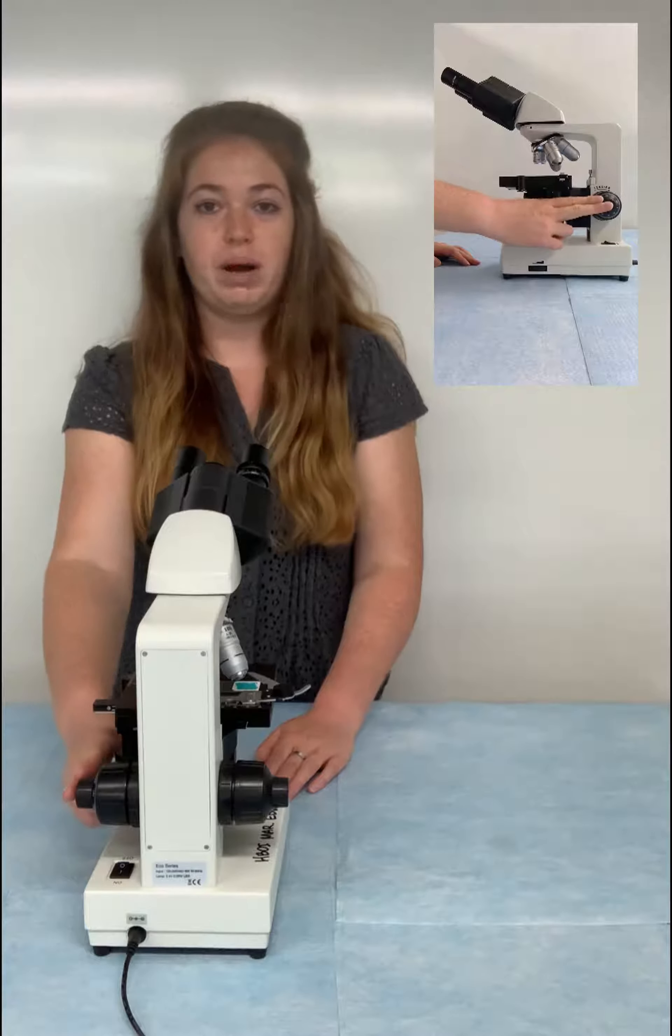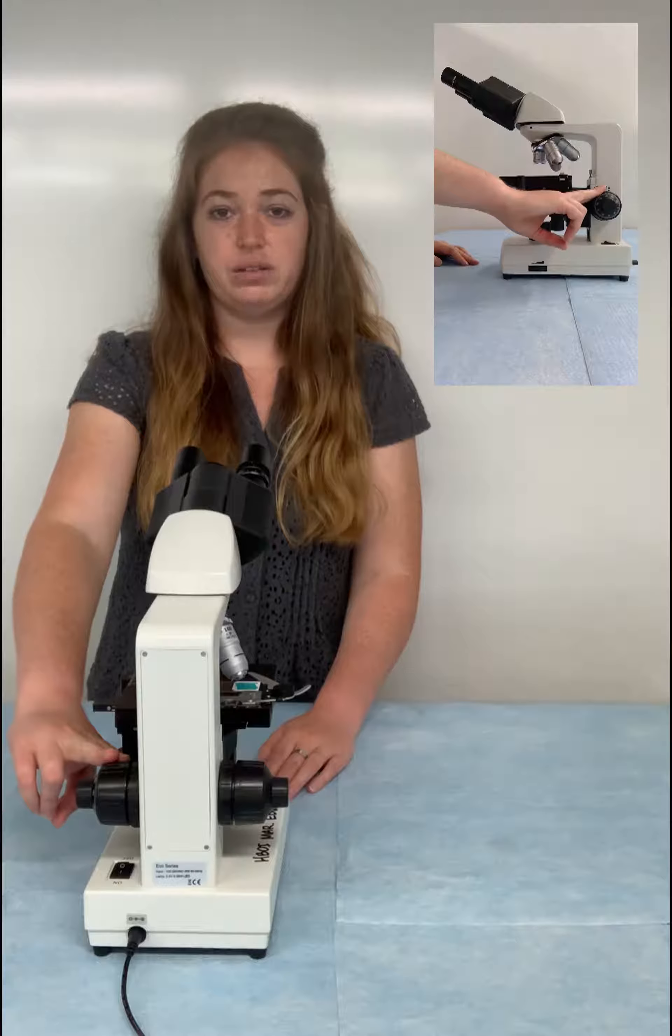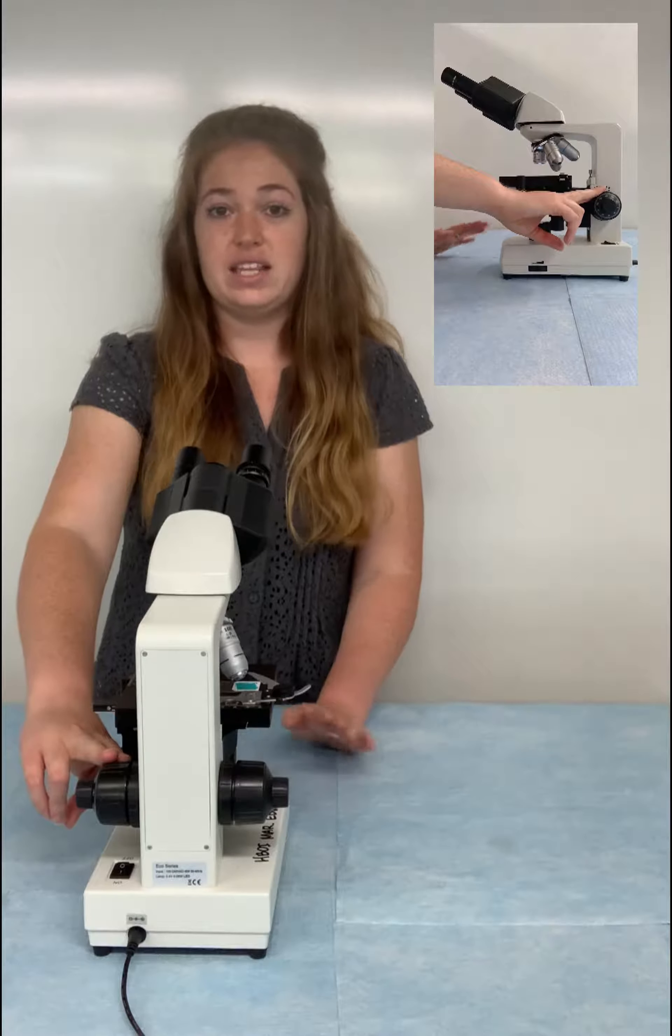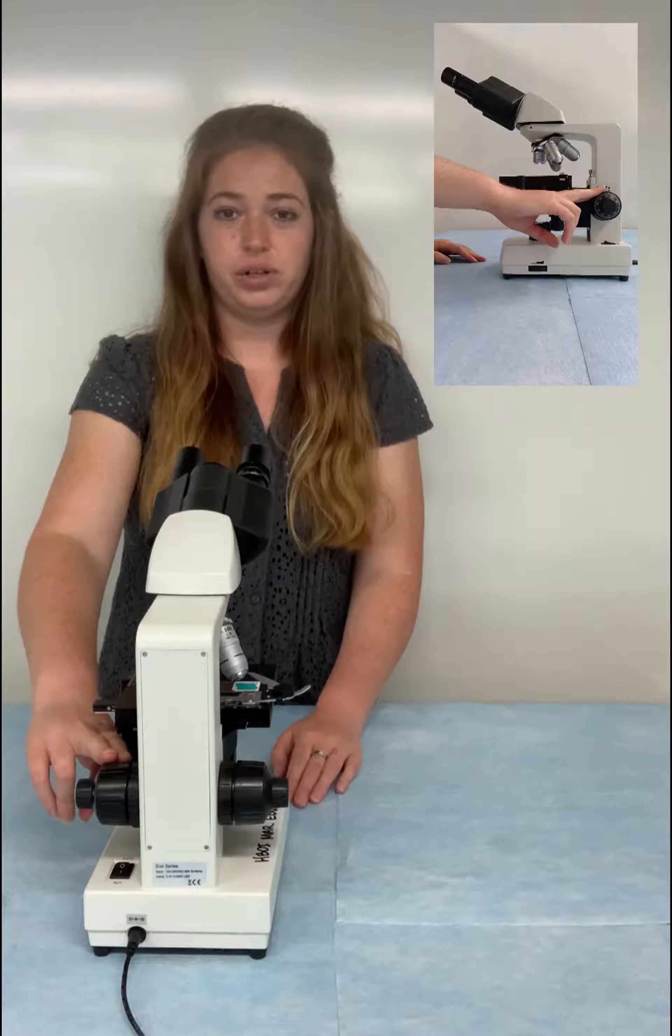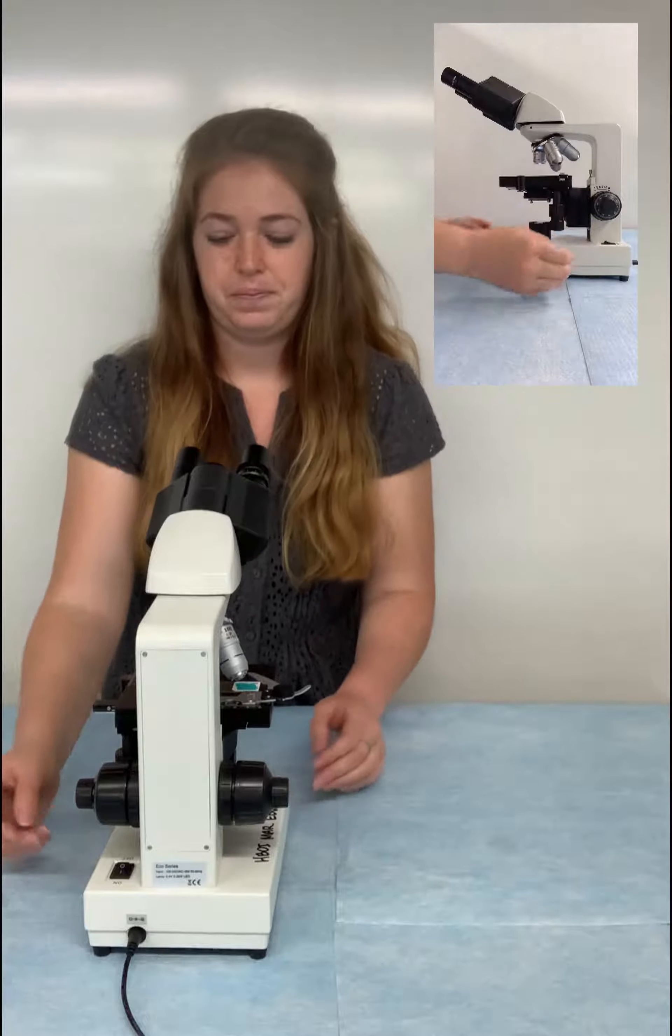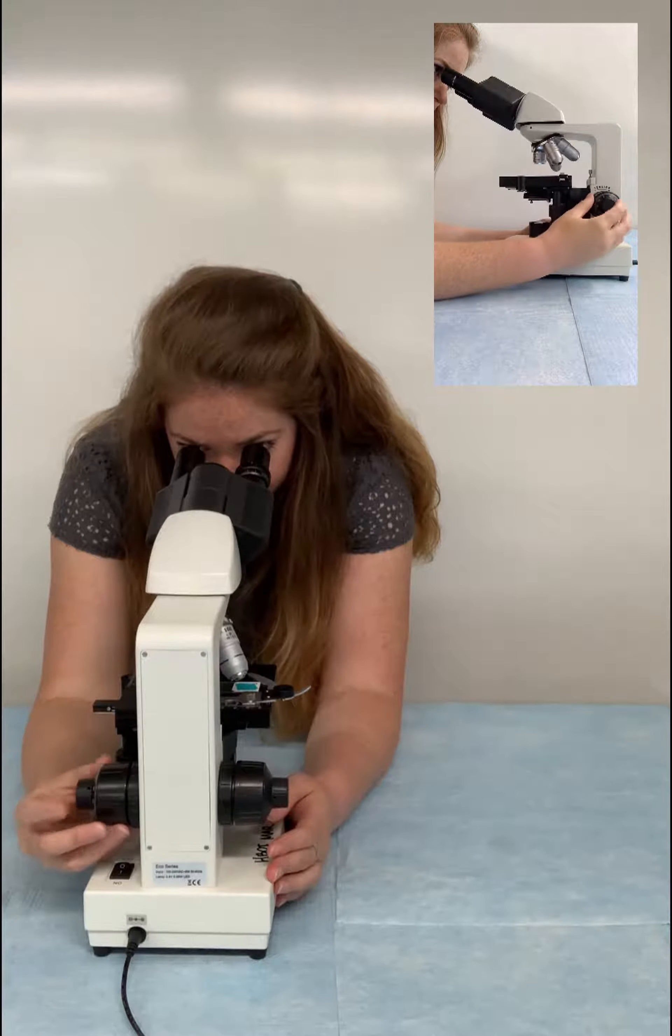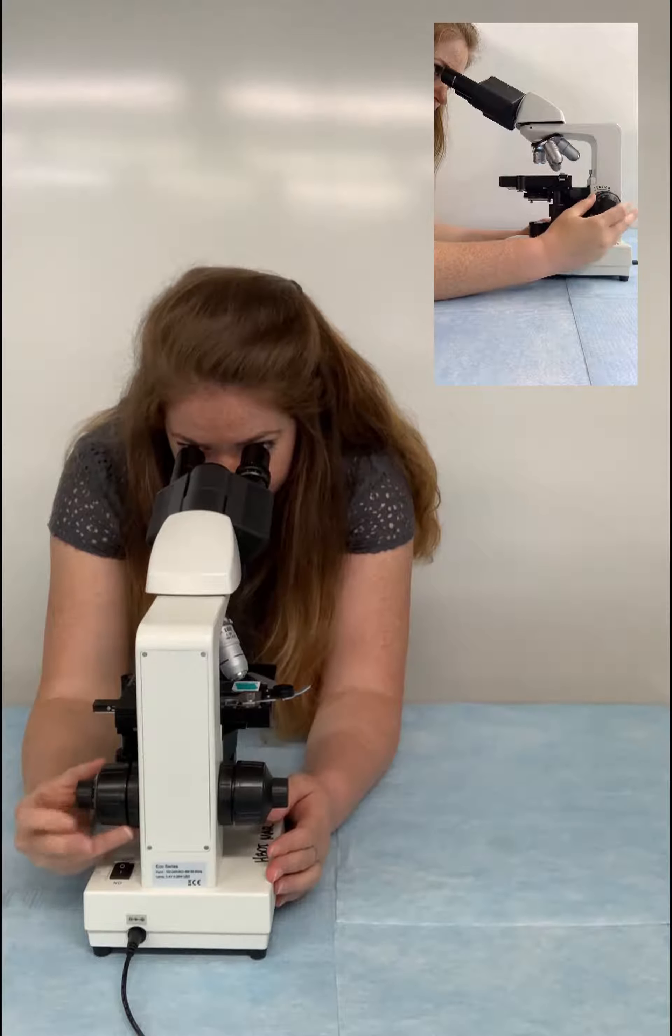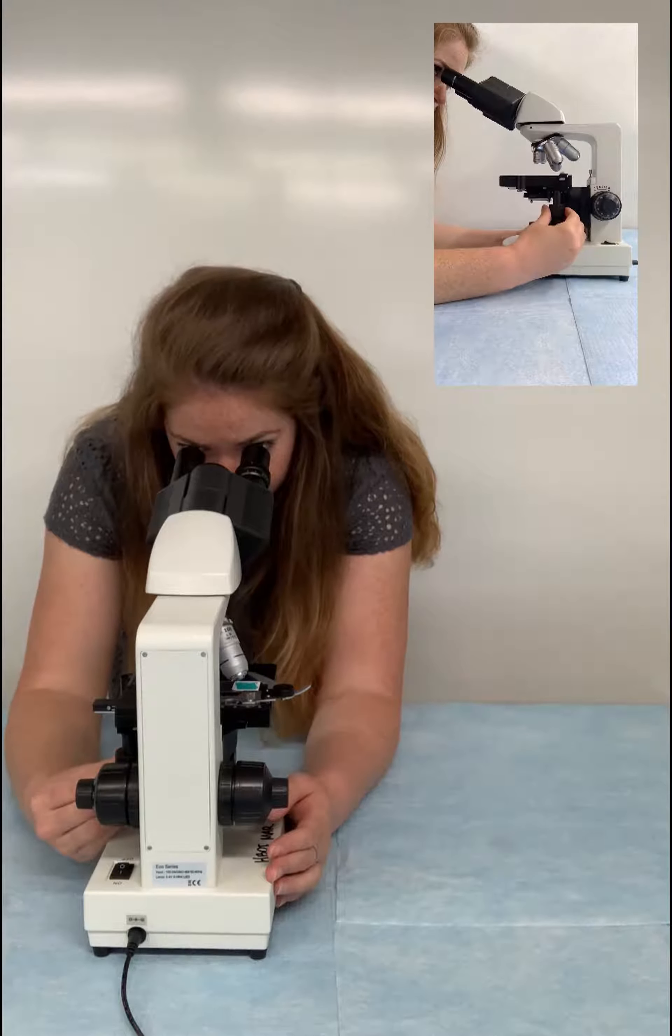From here you probably want to use the fine knob. Basically the coarse knob is what you use if you can't see anything at all under your microscope. Once you can see something but it might be a little blurry, then it's time to switch over to your fine knob to bring it into focus. So we're just going to twist this fine knob. And now we have our specimen in focus.